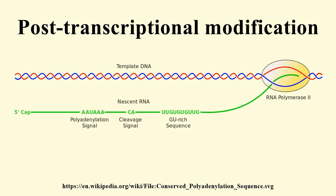RNA Splicing: RNA splicing is the process by which introns — regions of RNA that do not code for protein — are removed from the pre-mRNA and the remaining exons connected to re-form a single continuous molecule. Although most RNA splicing occurs after the complete synthesis and end capping of the pre-mRNA, transcripts with many exons can be spliced co-transcriptionally. The splicing reaction is catalyzed by a large protein complex called the spliceosome, assembled from proteins and small nuclear RNA molecules that recognize splice sites in the pre-mRNA sequence.